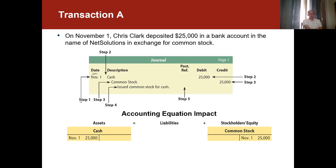Let's follow the steps of recording transactions. Step one: we record under the date column, November 1st, the date where this transaction took place. Step two: under description, we start by recording the debit account — cash. You can see it's recorded slightly to the left compared to common stock, which is indented to the right as the account to be credited. We always start with the debit under the description, then indent the credit. Cash is debited, and under the debit column we record $25,000. In step three, we record the credit, and under the credit column we record $25,000.